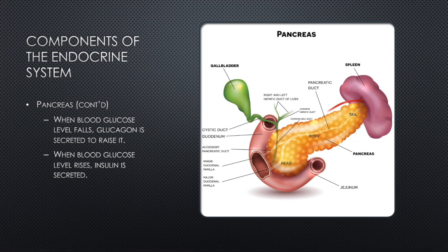When blood glucose levels rise, insulin is secreted — maintaining homeostasis. Insulin transports glucose into the cells because glucose cannot enter those cells alone; it needs insulin as the key that opens the lock. It stimulates the liver to take in more glucose and store it as glycogen for later use. When blood sugar drops again, that glycogen is ready to be stimulated by glucagon and converted back to glucose. Insulin is the only hormone that endogenously decreases blood glucose levels in the body.